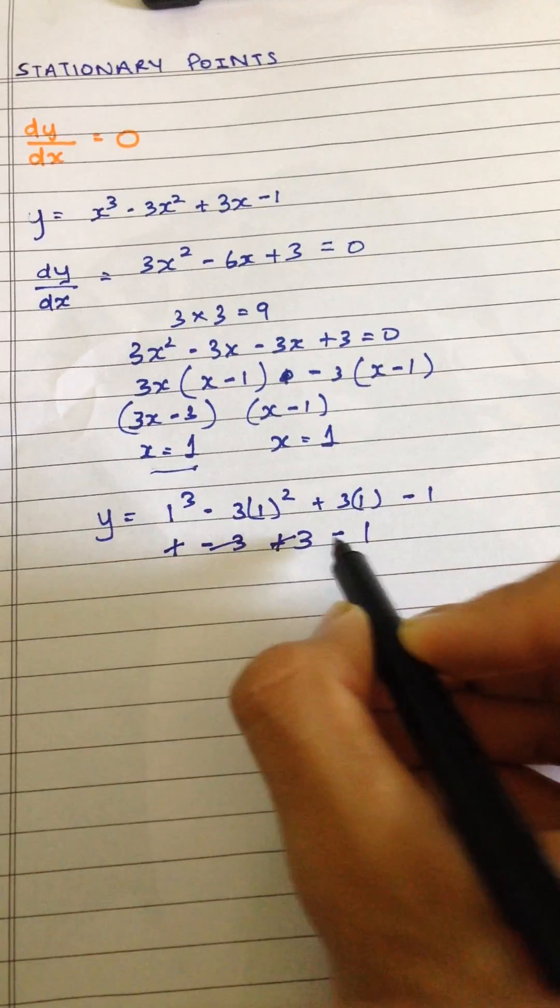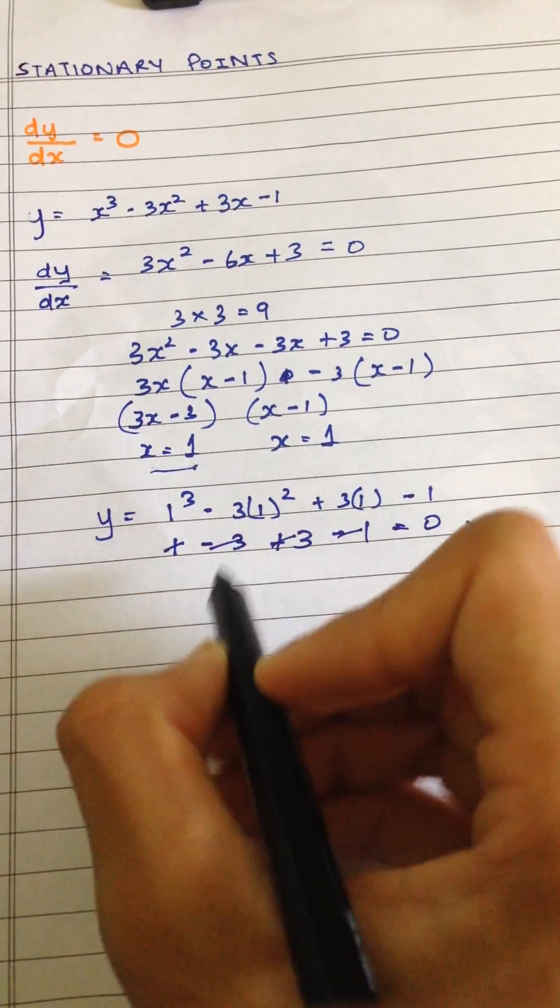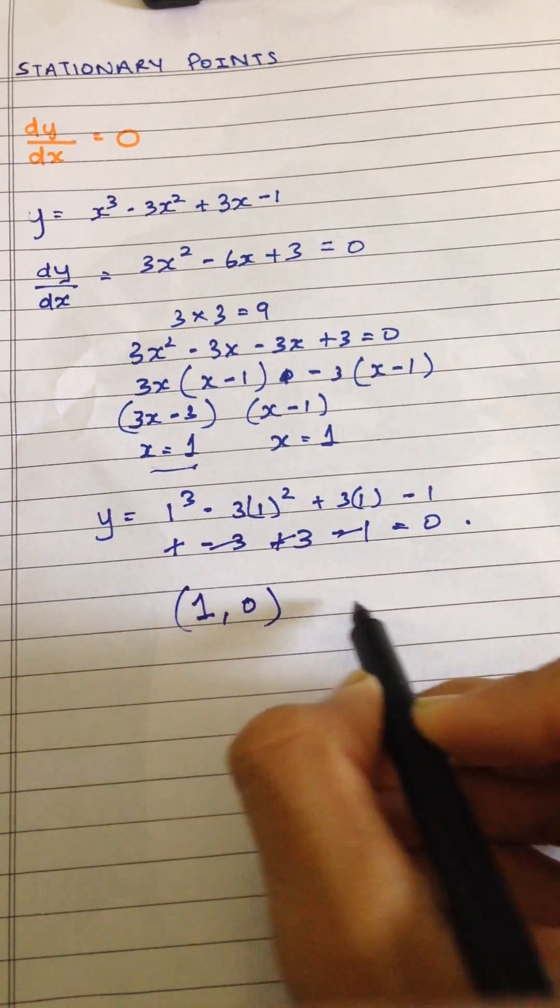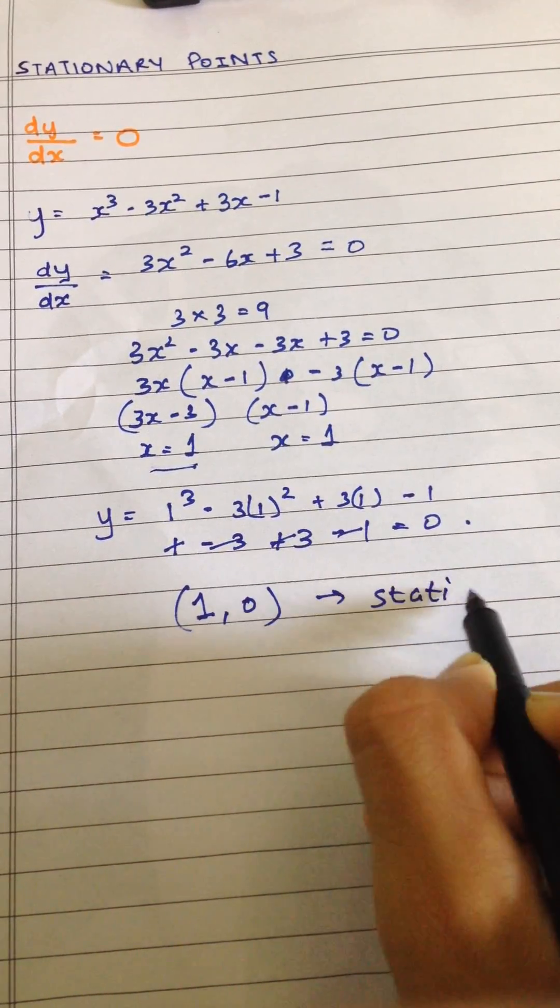So plus 3 minus 3 plus 1 minus 1, so that's equal to zero. So x coordinate is 1 and y coordinate is zero. So this is the stationary point on the curve.